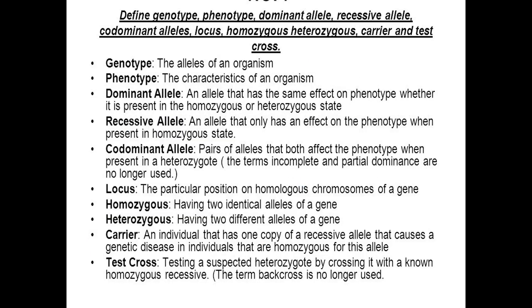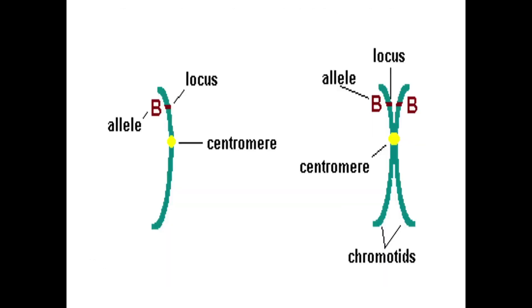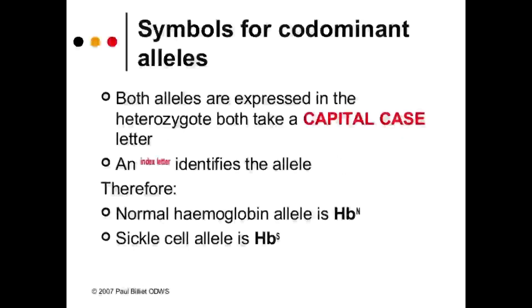We will now go through genotype, phenotype, and related terms. Here is the structure of the chromosomes again, showing the allele, the locus, the centromere, and the chromatids. This links to codominance.